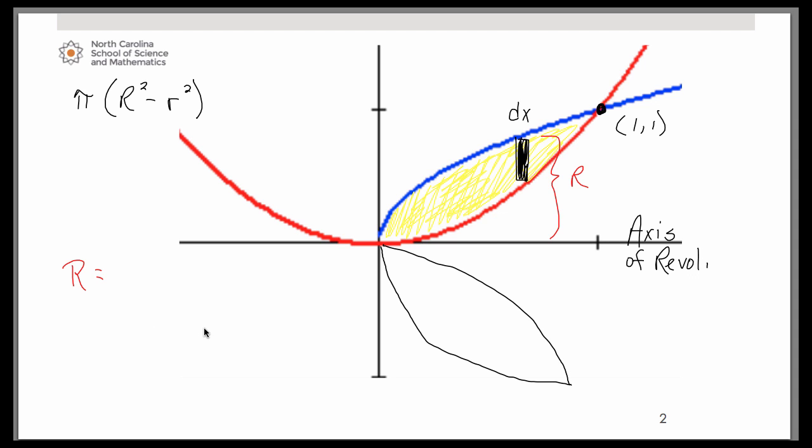We'll use the top minus bottom idea. So on the top, notice we're hitting the blue curve. Now that's the curve for square root of x. And on the bottom, we're simply hitting the x-axis. So big R is going to be square root of x.